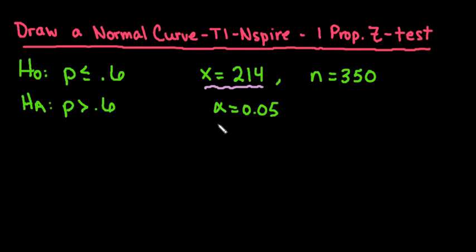So to run this in the TI Inspire, there are some things that you need to know. One of them is our p-naught, and our p-naught is always going to be the percentage that we have in our null hypothesis. So this is our starting value, the 0.6. We also need to know our number of successes, which is the 214. We need to know the entire number in our sample, which is 350. And we need to know what tail of test to run. In this case, since it's greater than, we're going to run a right tail test.